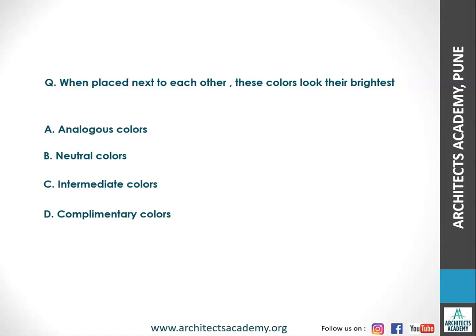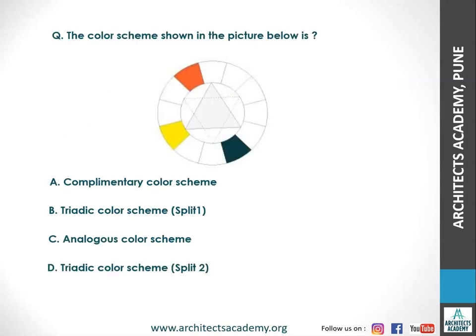When placed next to each other, these colors look their brightest — and the right answer is complementary colors. Next, the color scheme shown in the picture — the right answer is triadic color scheme split two. There are three colors, so it is a triadic color scheme, and they are split by a distance of two spaces each. That's why it is called triadic color scheme split two.